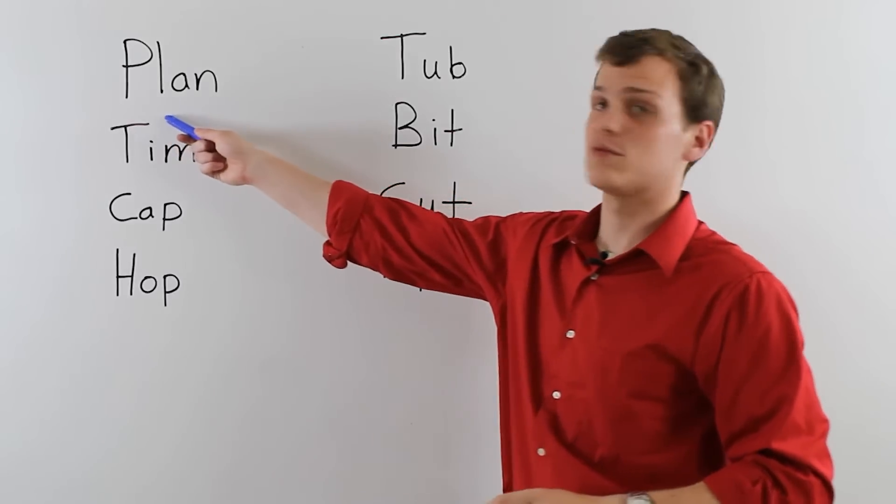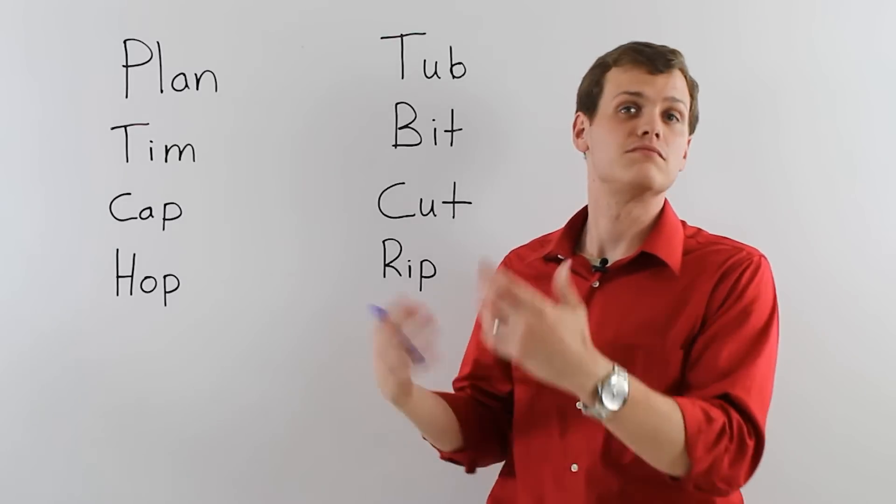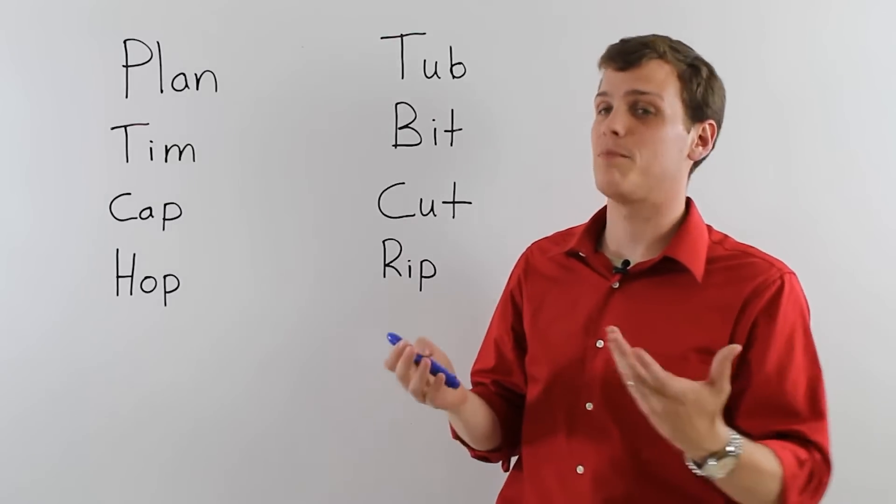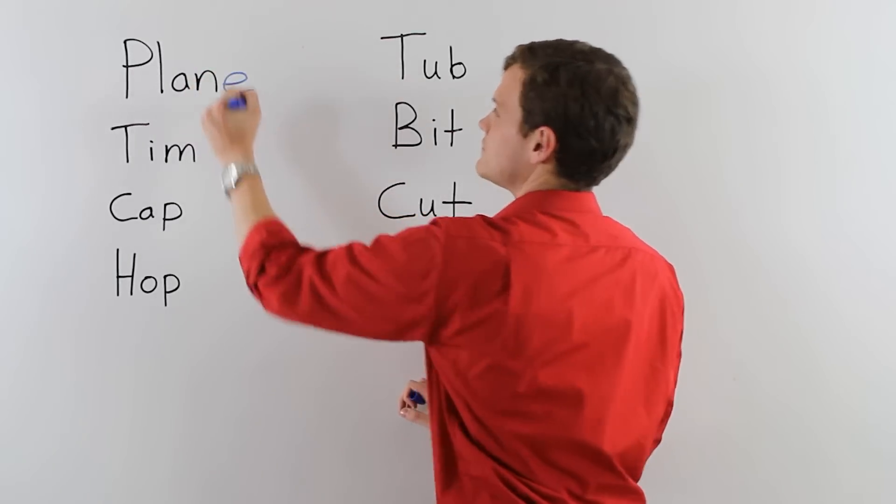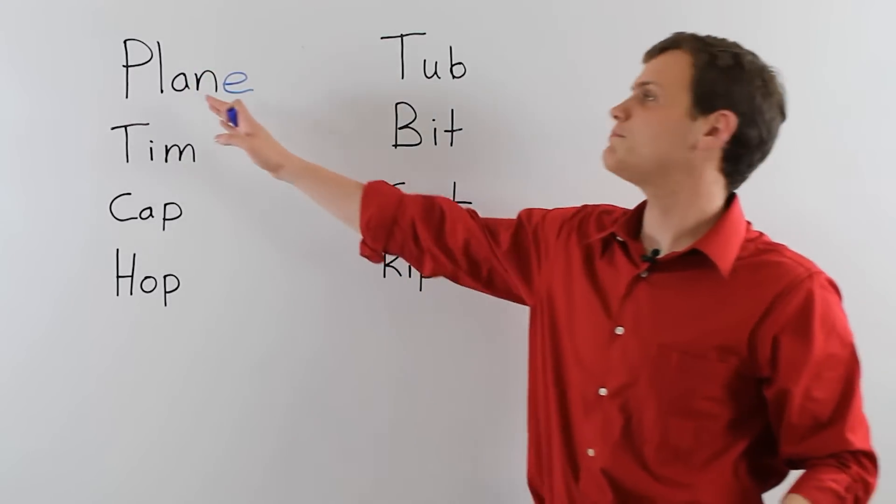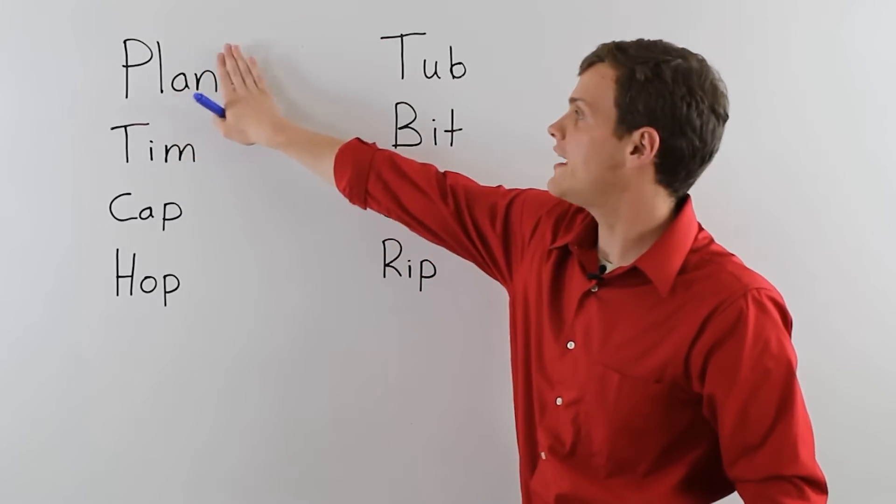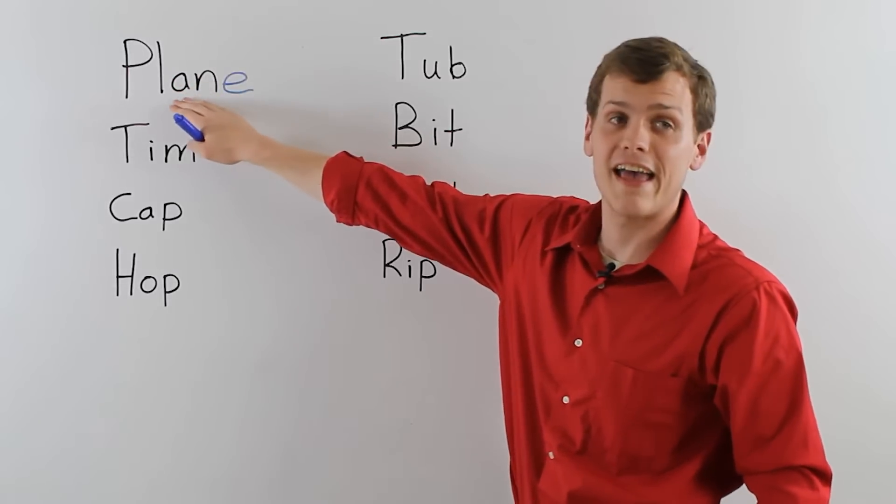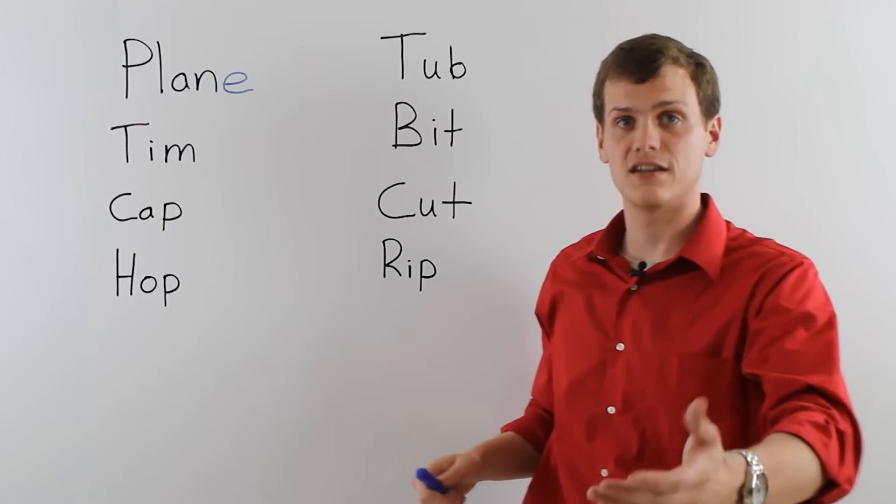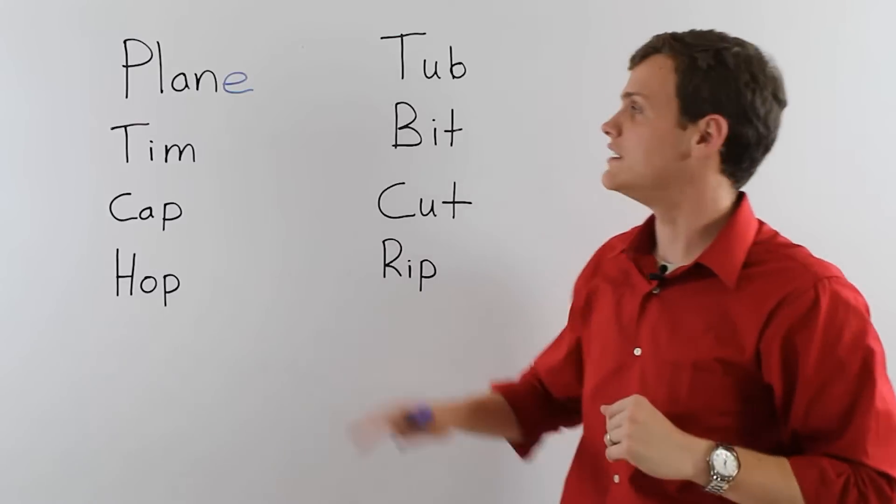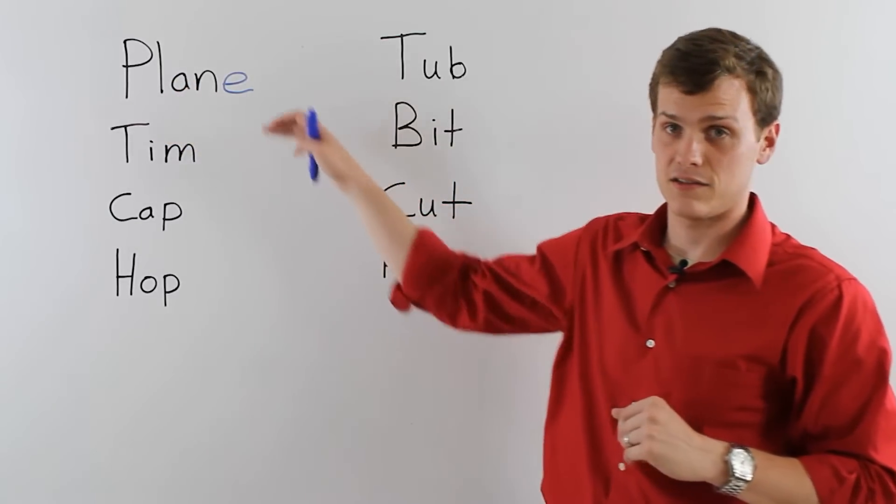I have this first word here, plan. That's like, I have a plan for tomorrow. So we know that, a plan. You make a plan. Then, if I do this, now it's not plan E. Now it becomes, before it was short A, plan. Now, long A, plane. Like an airplane. Look at the plane in the sky. Not plan E. Now it's long A. Plane.